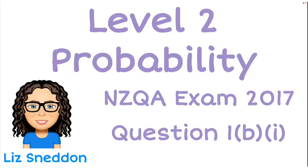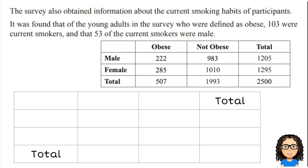Hi, I'm Liz Sneddon. Let's have a look at Question 1b, Part 1 from the 2017 Level 2 Probability Exam. So here is our question. This survey that we were given previously talked about obesity, and that's what we've got in the table below.